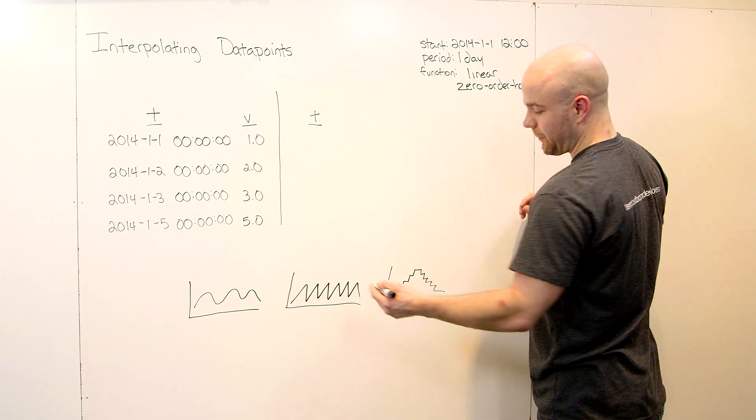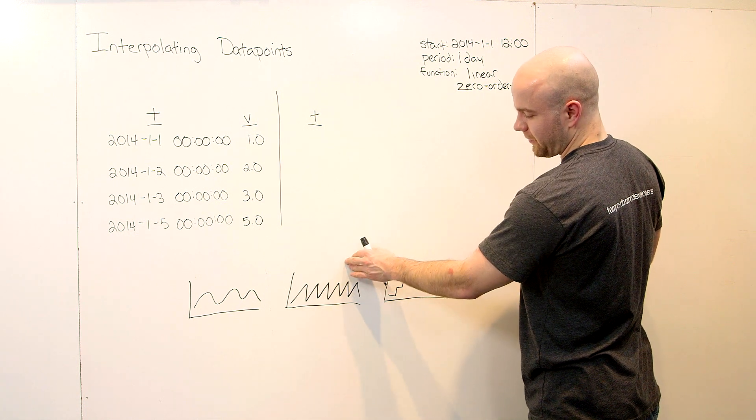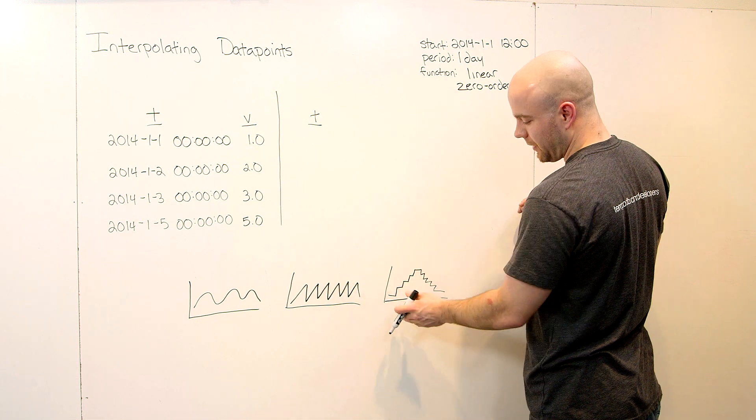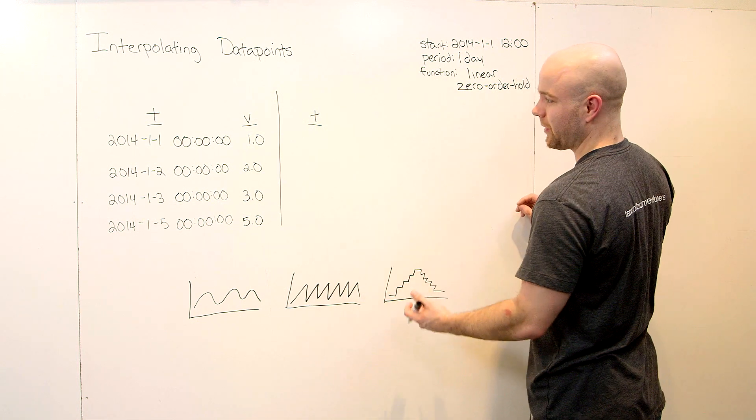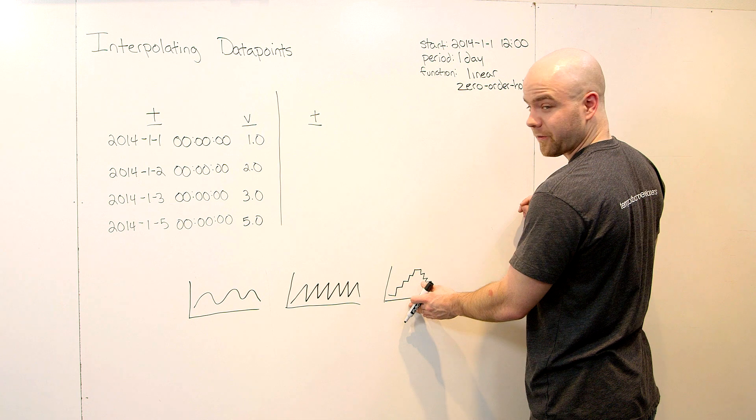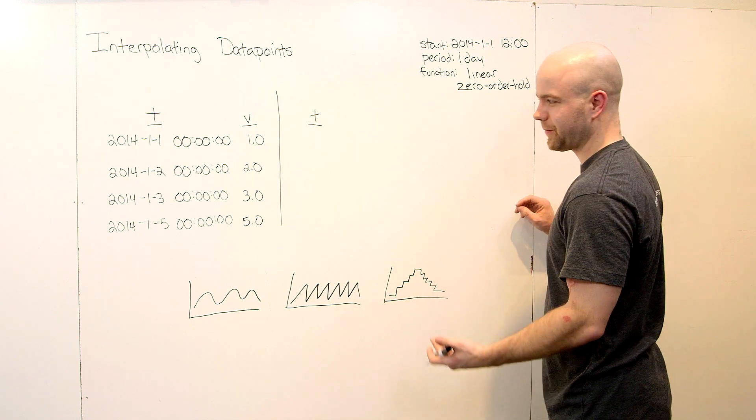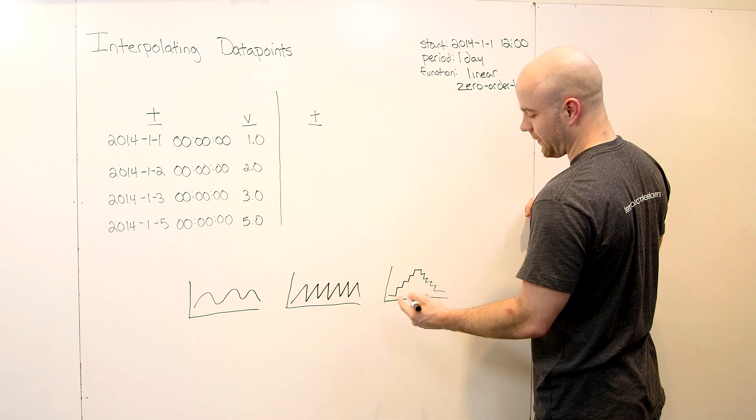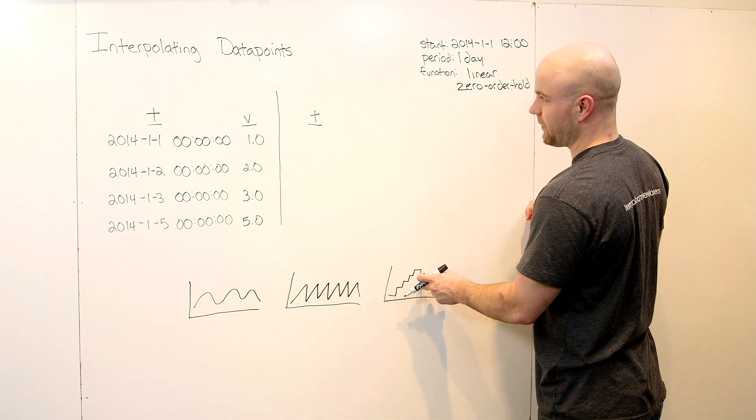In terms of business application, linear interpolation is best when your data is continuous, which is most time series data. But for cases where you're counting over a period of time, zero order hold is better because it's impossible to have like a 2.1 or a 5.6 when you're counting things. This will ensure that your data points are whole.